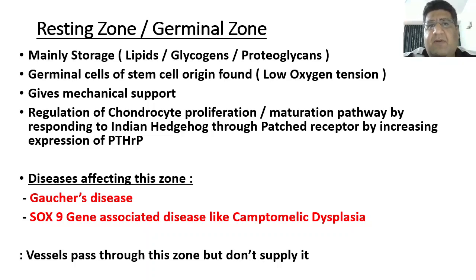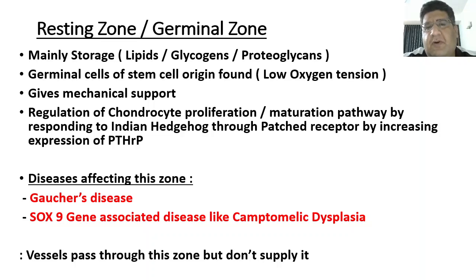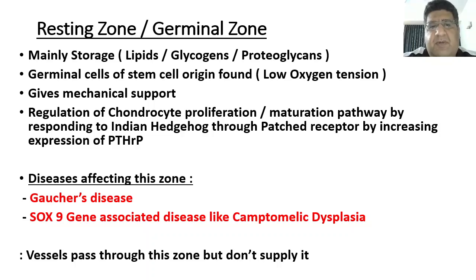The germinal cells have a habit of living in low oxygen tension, so you see a mildly anaerobic environment. The zone not only gives you the germinal cell and the sense of storage, it is also important for providing mechanical support. The basic essence is that there is a regulation of chondrocytic proliferation or the maturation pathway by responding to the Indian Hedgehog gene through PTH receptors, increasing the expression of parathyroid-related peptides (PTHrP), leading to maturation and proliferation of the chondrocytic area.